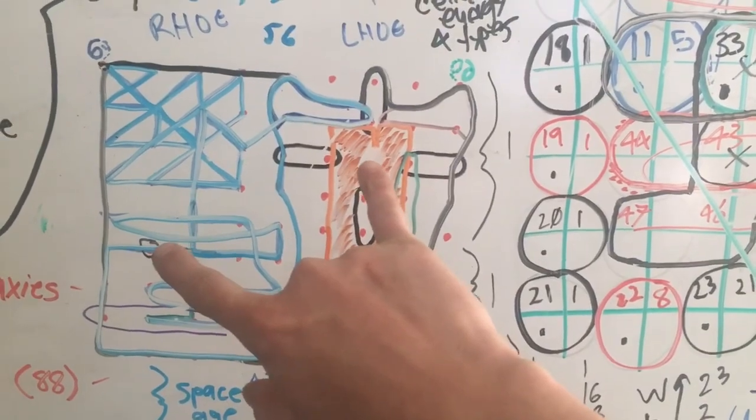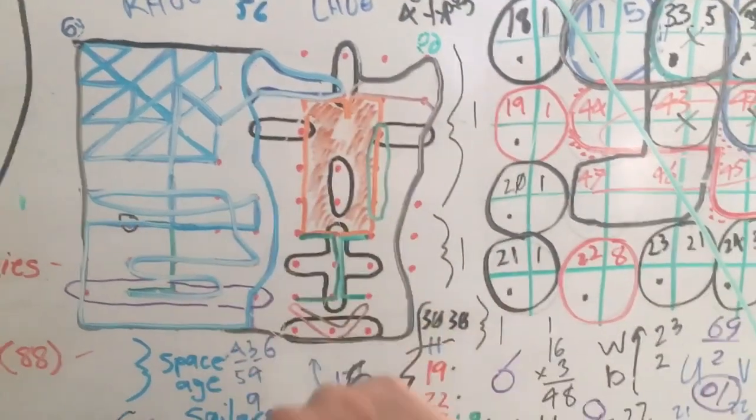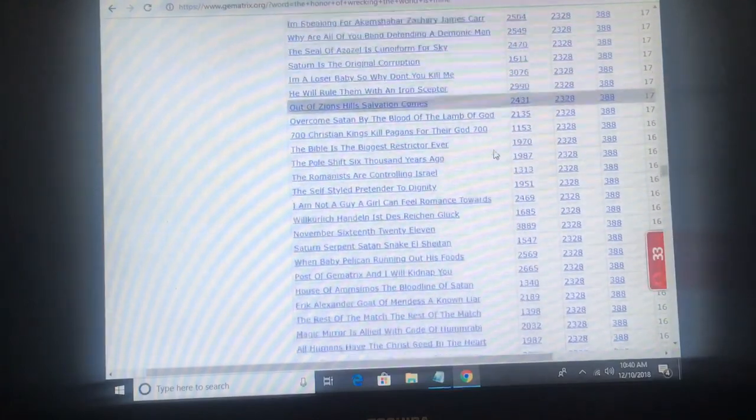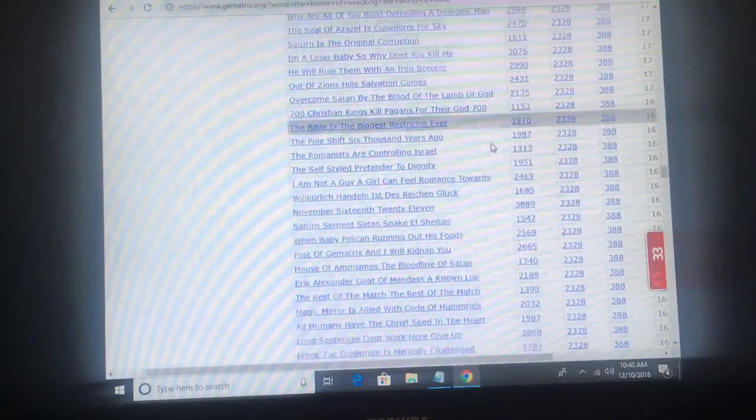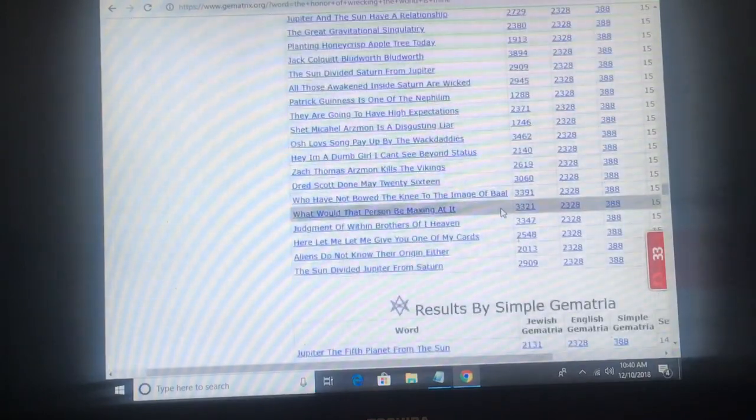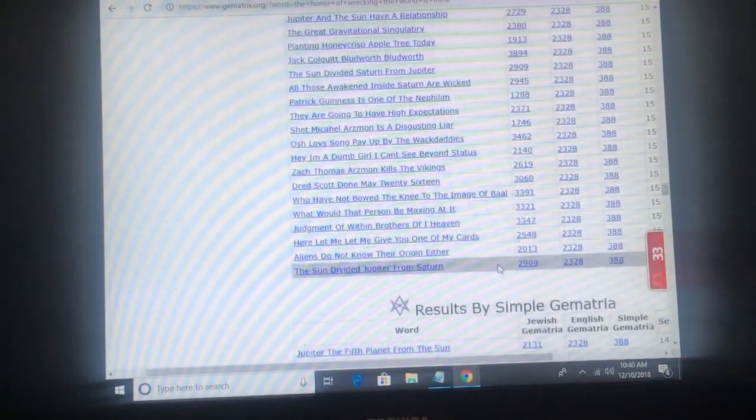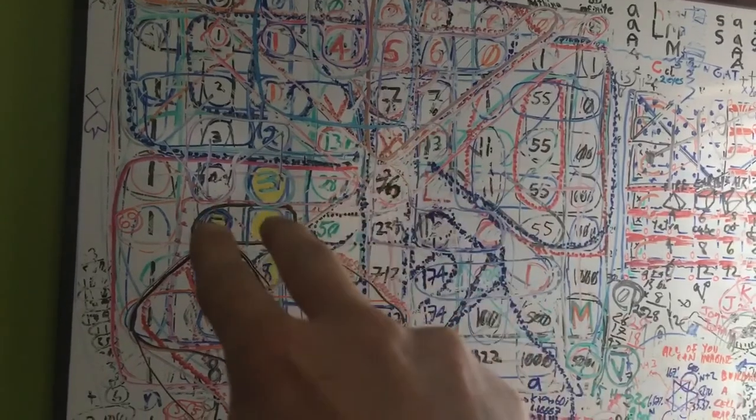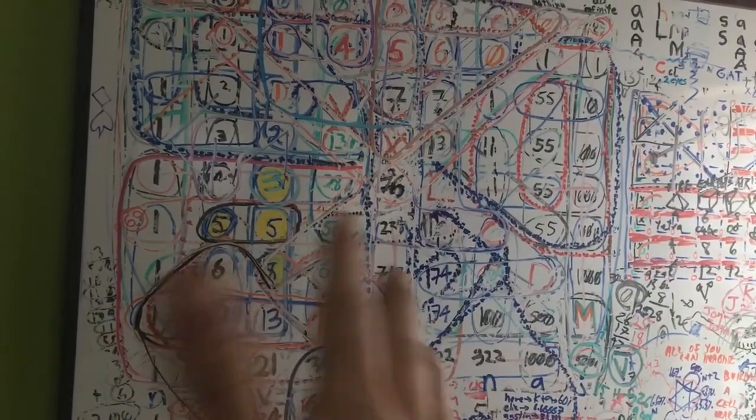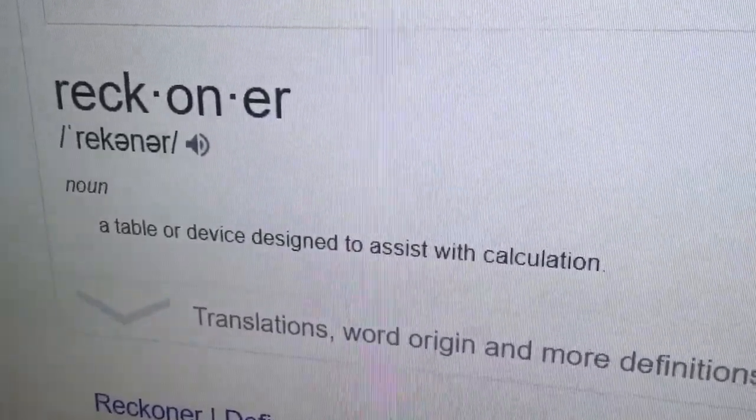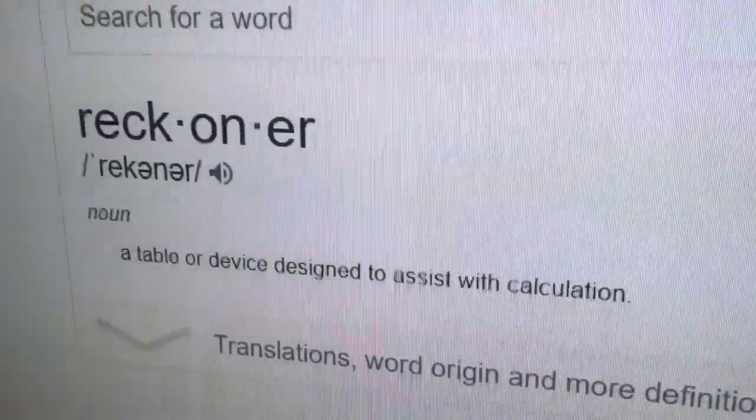And you need to know about a three to one too. So I hope this shows you how important 3858 is. The definition of Reckoner is a table or device designed to assist with calculation.